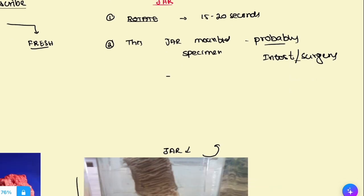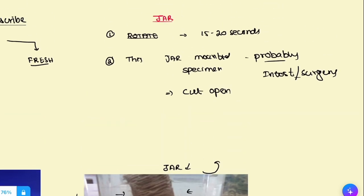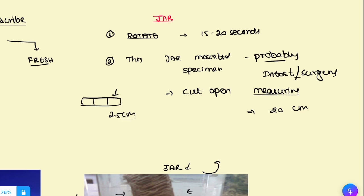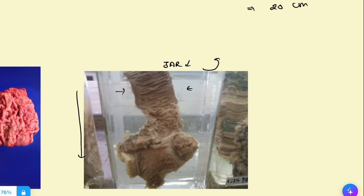After identifying the organ, you can say whether the specimen is cut open or not. Most specimens will be cut open — meaning the intestine, which is a hollow viscus, has been cut and spread out so you can see everything inside. So say 'this is a cut-open specimen of an intestine measuring approximately 20 centimeters in length.' For measuring without a scale, use your fingers — each phalanx, proximal, middle, and distal, is approximately 2.5 centimeters. Use that as a rough scale of measurement.